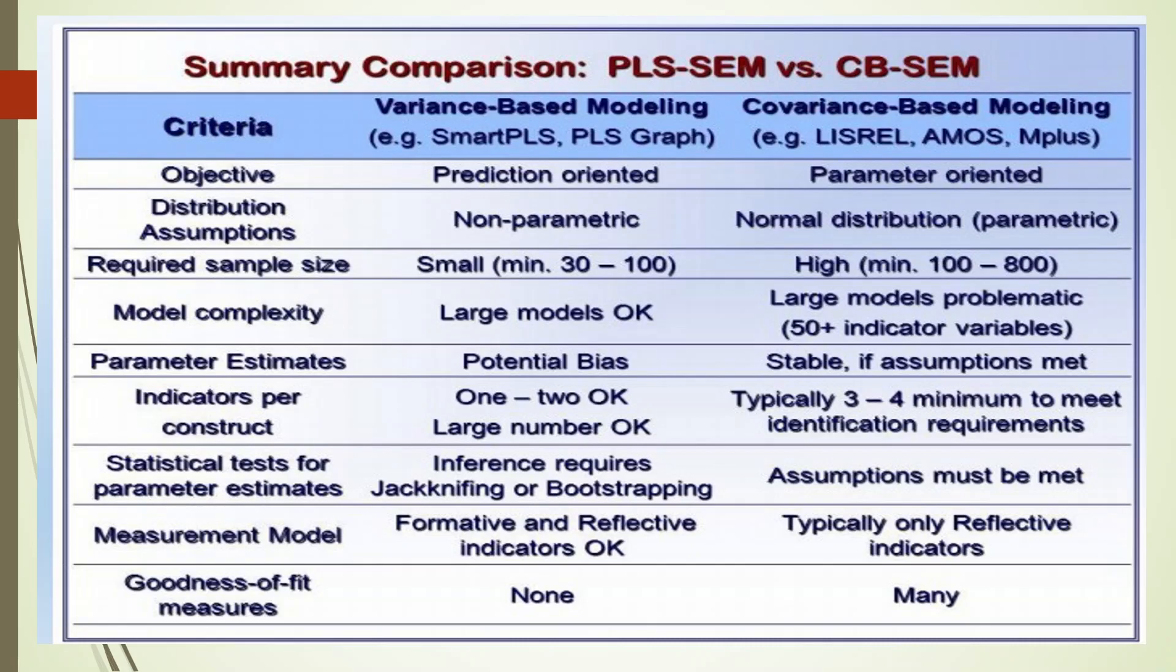Parameter estimates: in case of Smart PLS potential bias can be there, while in case of CB-SEM they are more stable if normality assumptions are met. Indicators per construct: it means that one or two items can also represent one construct or one or two measured variables can also represent the construct. While in case of CB-SEM, minimum three or four items would represent one construct.